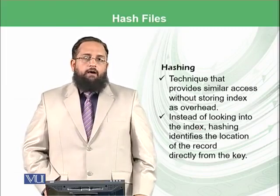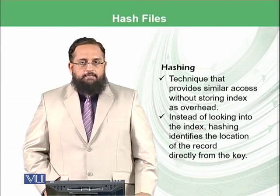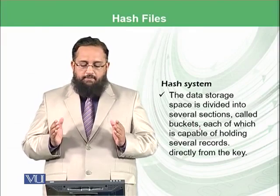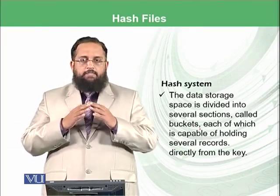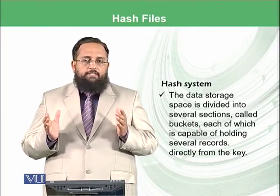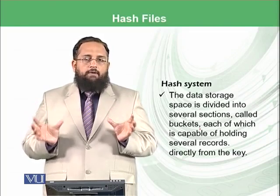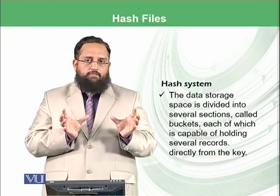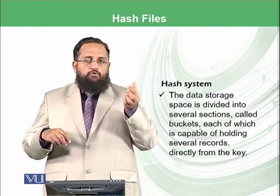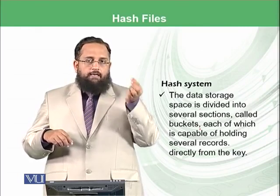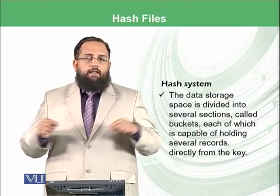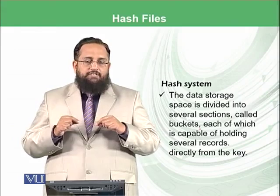We will be having different examples of hashing in this module and in the next module as well. In a hashing system, the data storage space is divided into several sections called buckets. We form small buckets of data storage and in each bucket we store multiple items. Whenever we want to store a record, that record will find its particular bucket where it can be stored, and within that bucket we will be searching in a sequential manner.